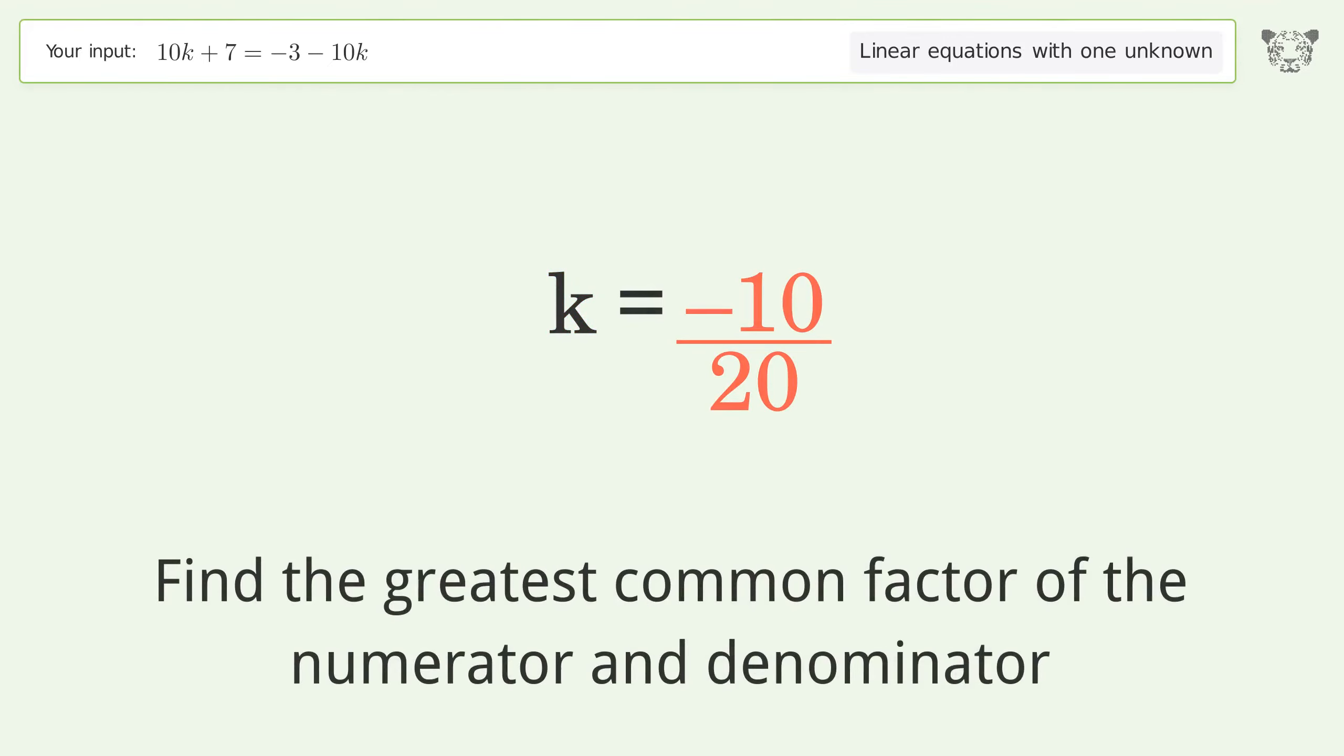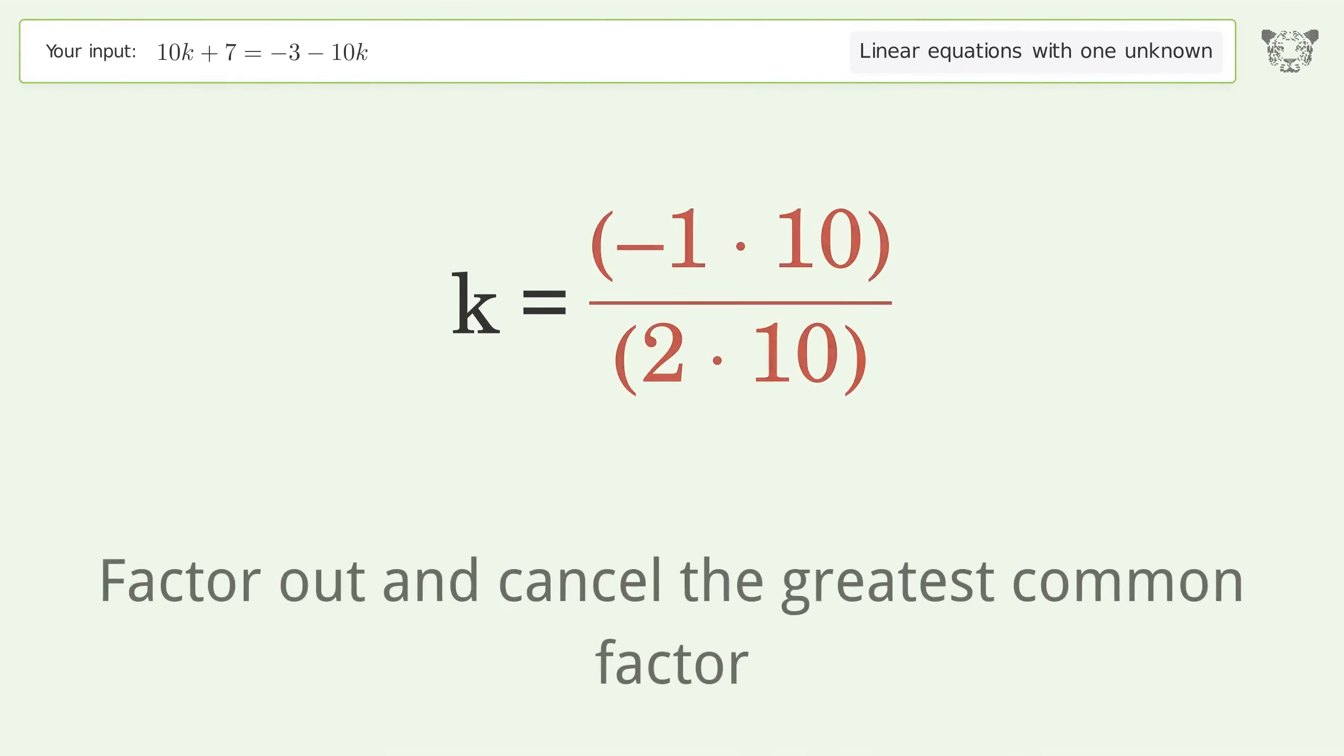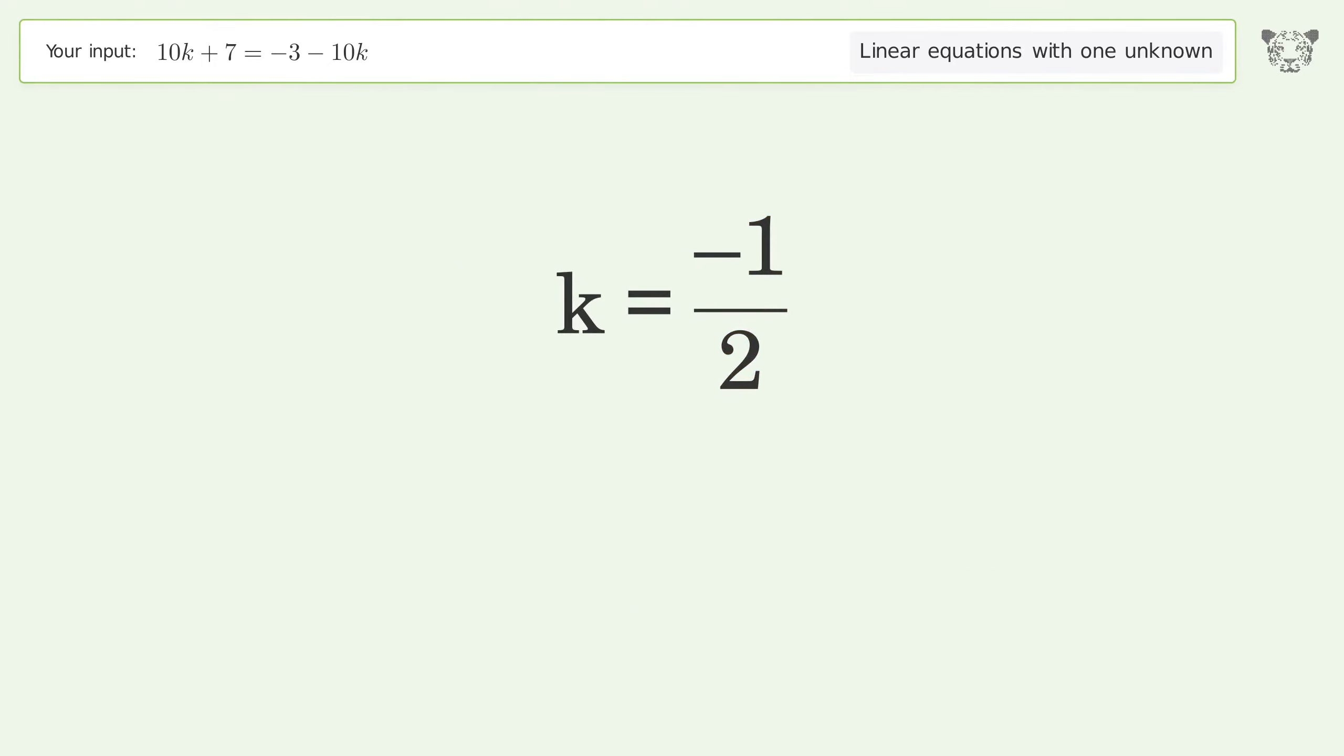Find the greatest common factor of the numerator and denominator. Factor out and cancel the greatest common factor. And so the final result is k equals negative one-half.